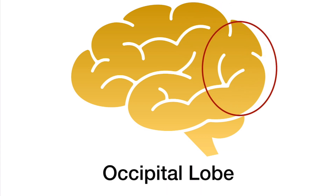On the very back we have the occipital lobe, which is primarily for visual processing — things like recognition and spatial analysis. This is a pretty well-developed part of the brain for humans because we do a lot of things that are visual.